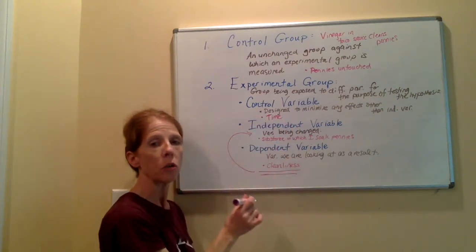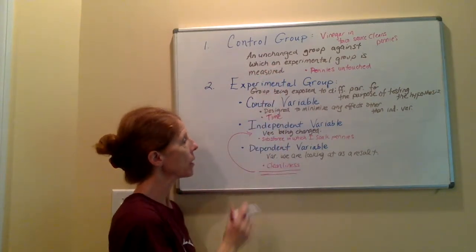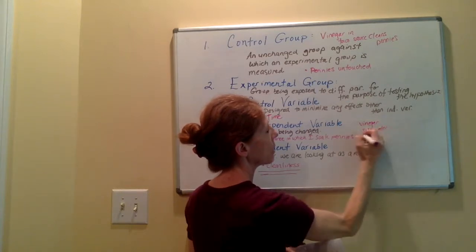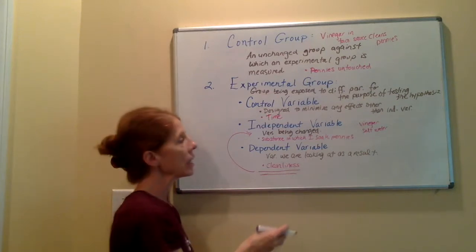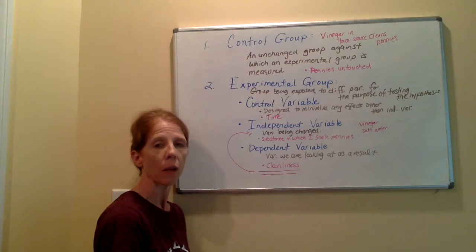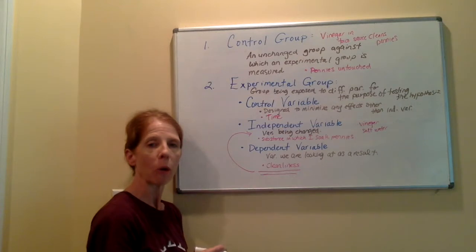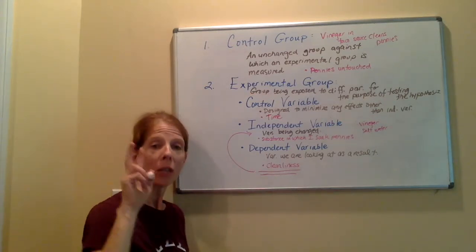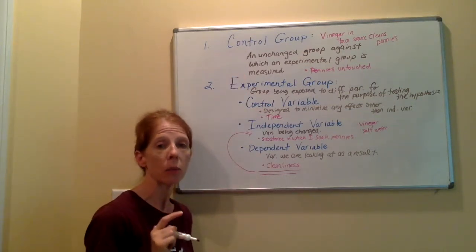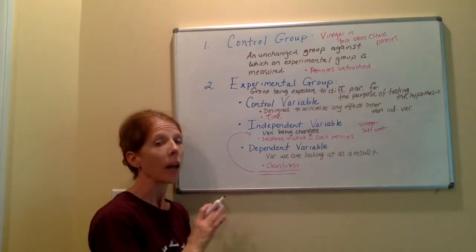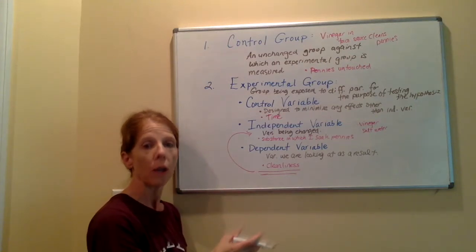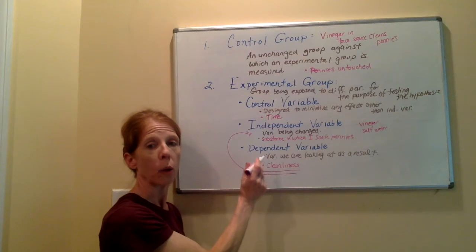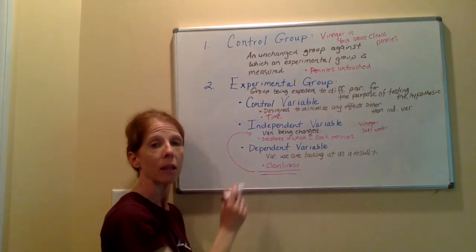So we can look at our cleanliness and see if there is any link to our independent variable. The independent variable is the thing we're using to test our hypothesis — maybe vinegar, maybe salt water — looking at everything in the taco sauce to see if any of them has a greater influence than the other. That is just an example of how you would set up an experiment to make sure you have all the correct groups and variables in place. Go back to the experiment you have designed and look: do I have a control group, a control variable, one independent variable, and a dependent variable? Make sure you have a data table on Tuesday so you can record some results. Thanks so much.